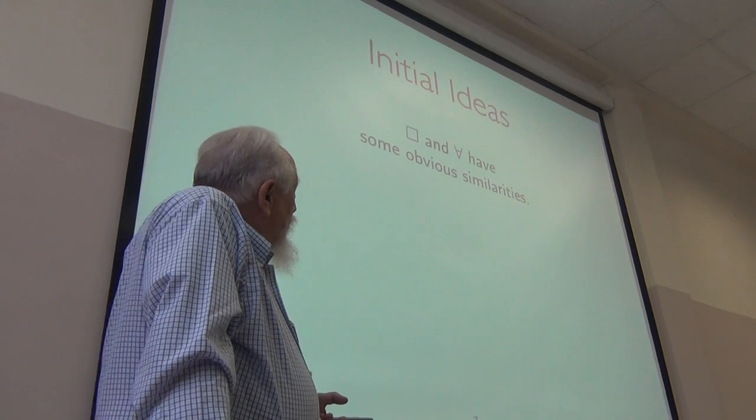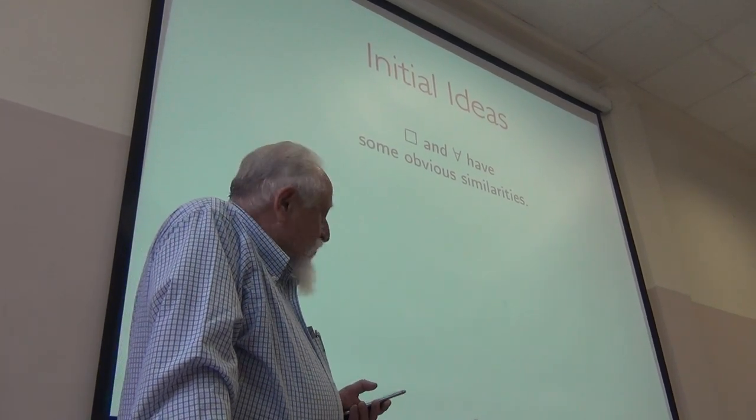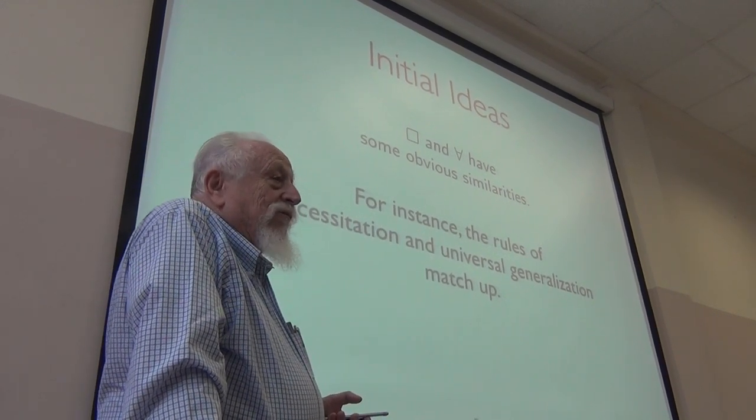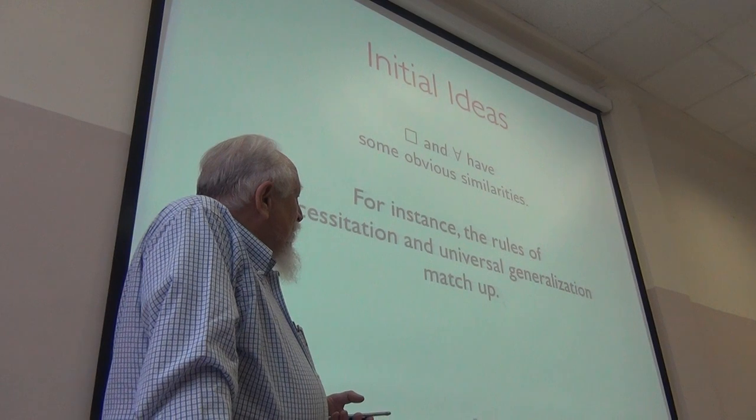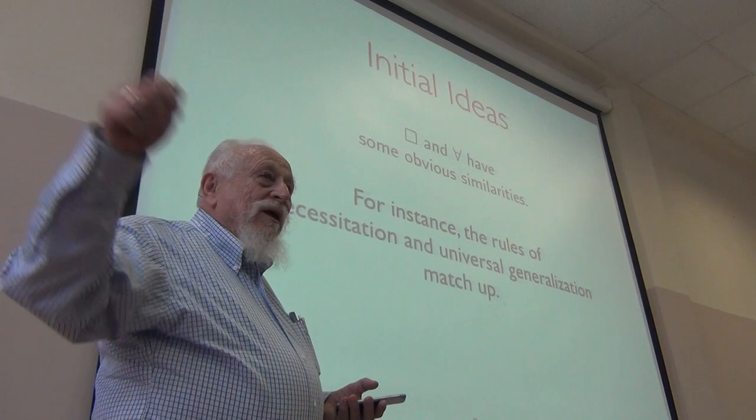So, understood that way, for all x phi of x is true in a domain d if phi is true for each thing in the domain. Technically, this isn't a formula, but as long as we all understand how it's used, that's fine. Now, the thing is, box and for all certainly have some very obvious similarities. You have a rule of necessitation from x, conclude box x. You have a rule of universal generalization from x, conclude for all x.